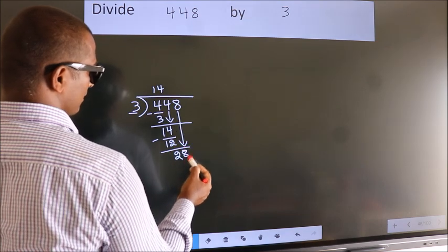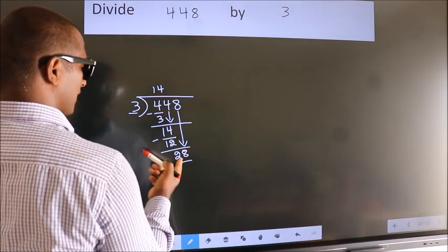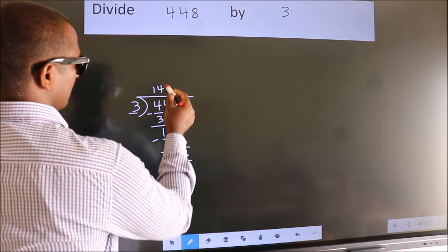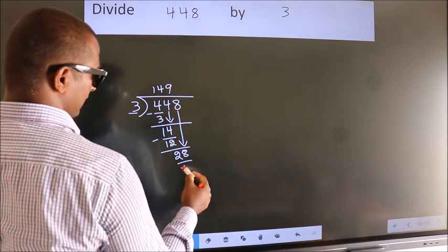So, 8 down. So, 28. A number close to 28 in 3 table is 3 9s 27.